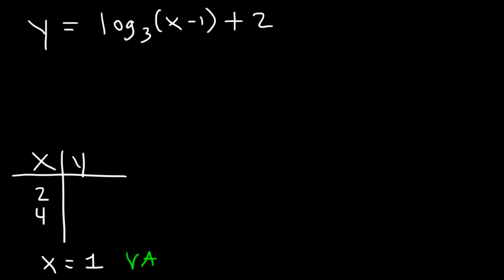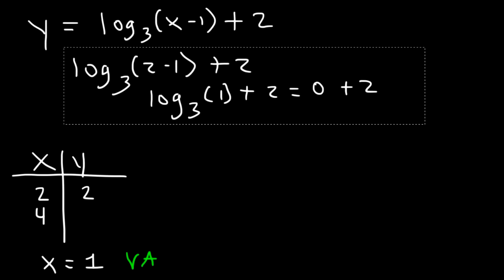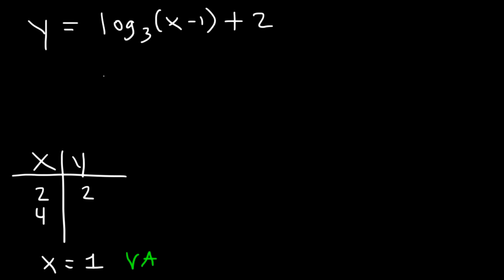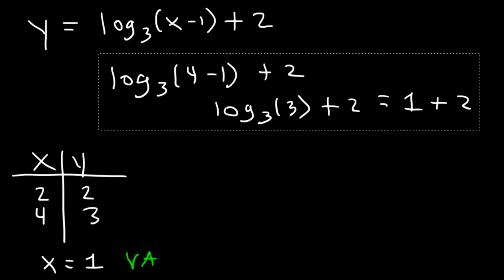Now let's find the y values. When x is 2: log base 3 of (2 minus 1) plus 2. 2 minus 1 is 1, and log of 1 is always 0, so this is 0 plus 2, which is 2. Now when x is 4: 4 minus 1 is 3. Log base 3 of 3 — because the numbers are the same — is 1. And 1 plus 2 is 3. So now we have everything we need to graph it.